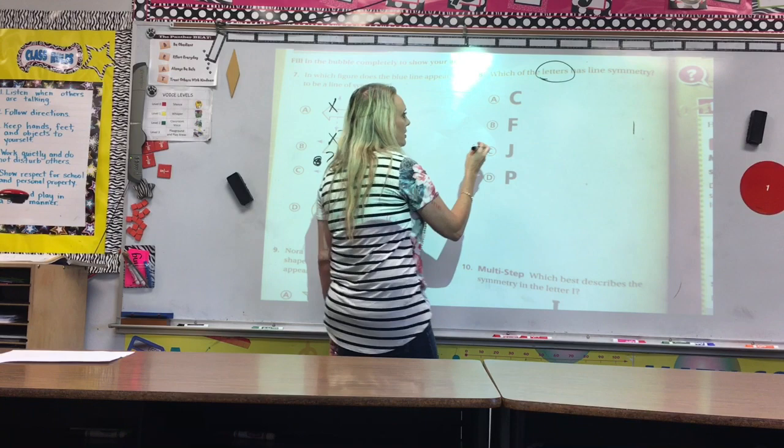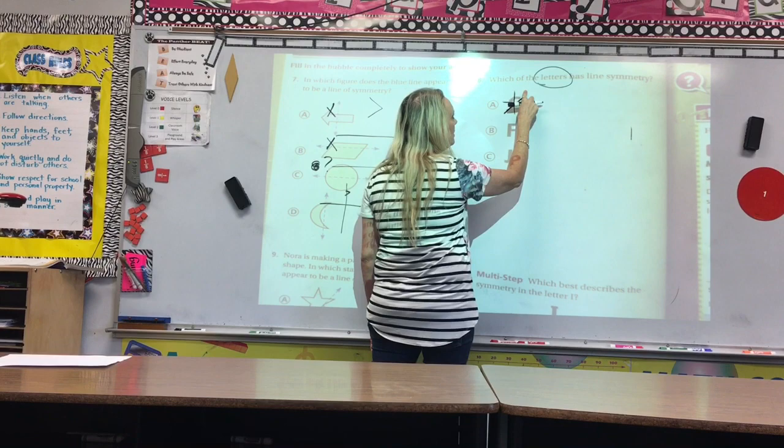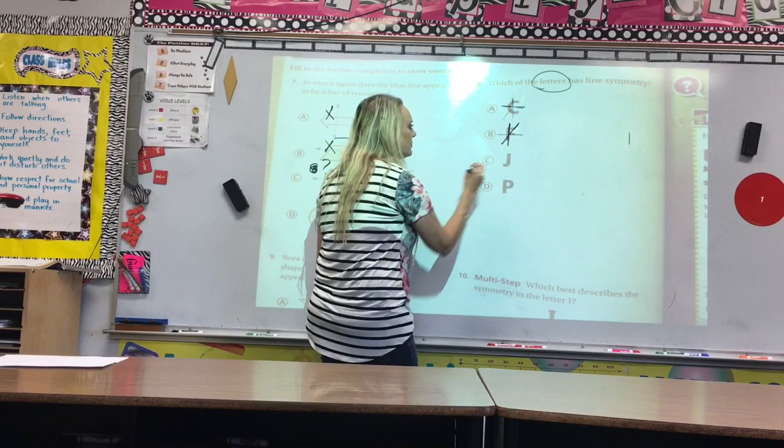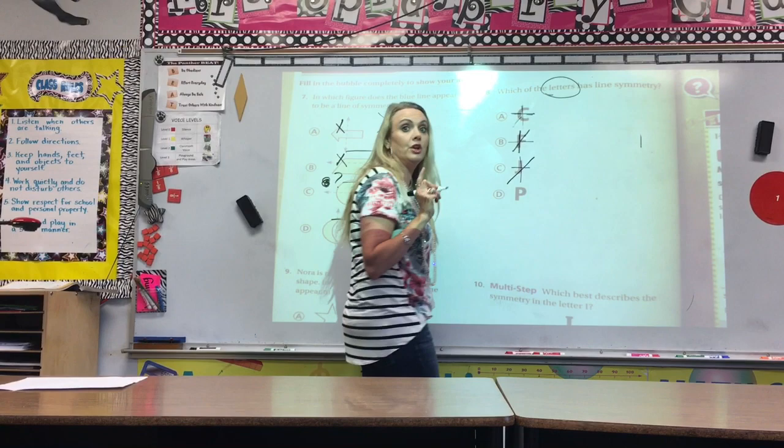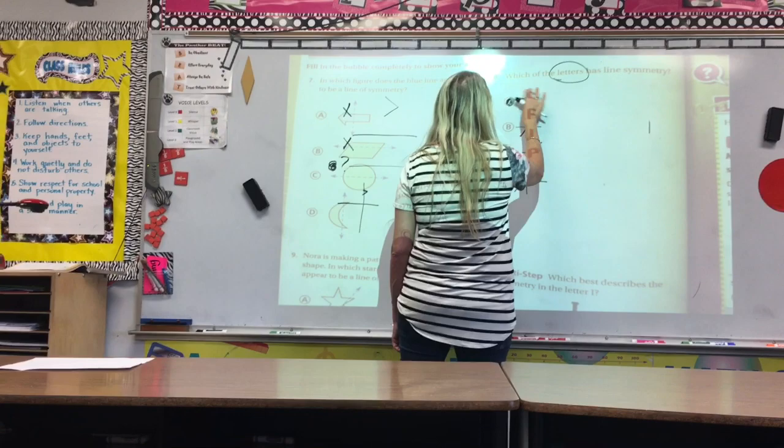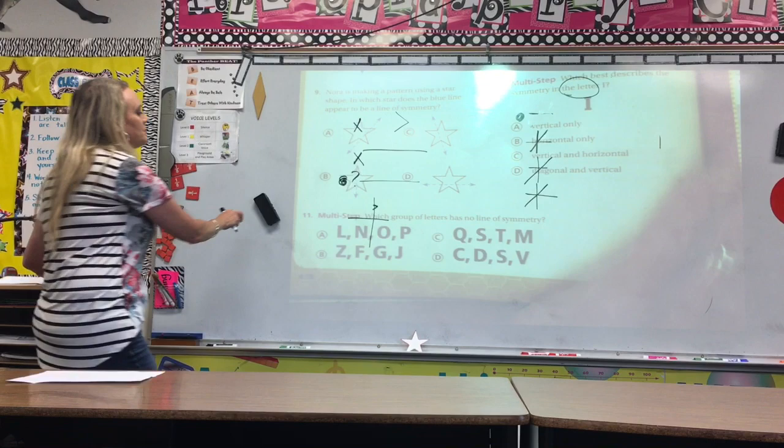Number 8, which of the letters has a line of symmetry? Well, let's try them out. C, oh, the only one it does is horizontal. You're going to have to try all different ways. F, no. J, no. And the P, no. So, it is definitely C has one horizontal line of symmetry.